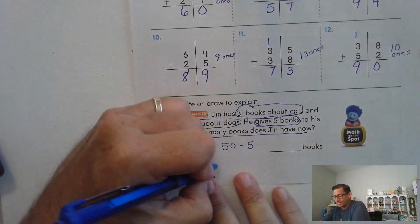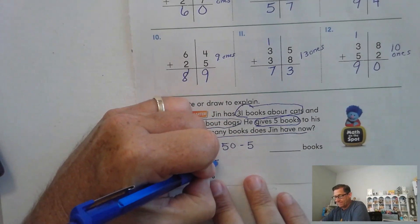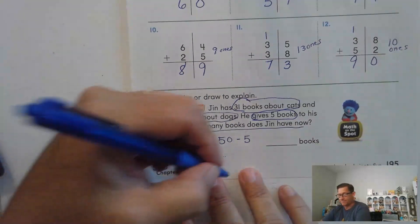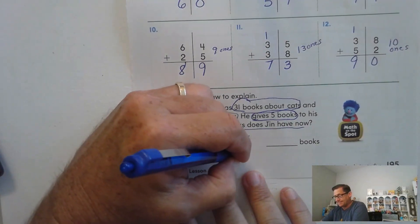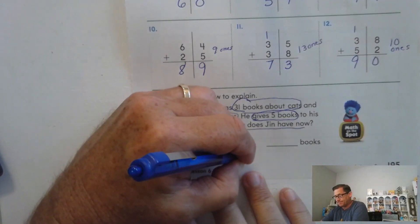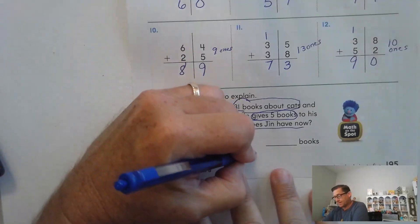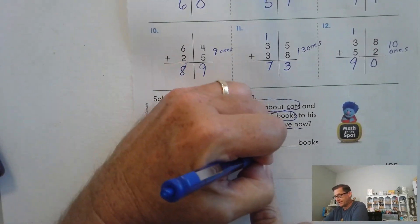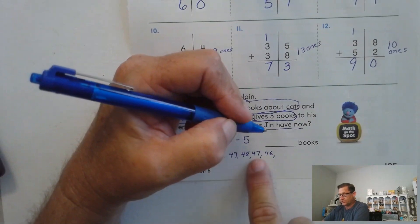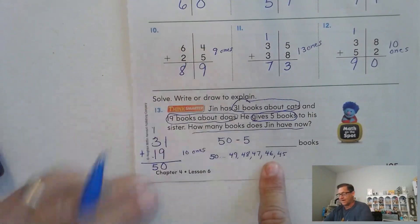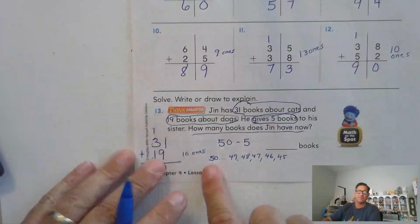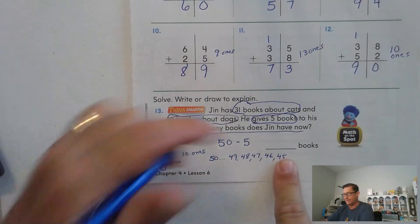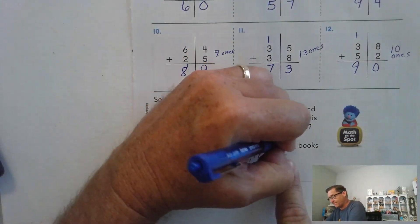If need be, we can count backwards. We're at 50, so let's take away 5: 49, 48, 47, 46, 45. So if we count back 5 from 50, we'd wind up at 45.